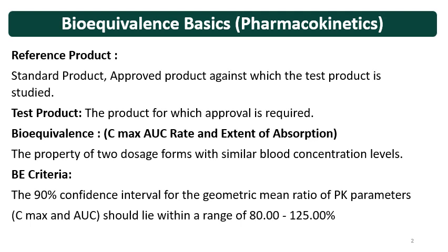Rate of absorption is measured by Cmax, and extent of absorption is measured by AUC — that is, area under the curve. In simple terms, AUC represents the dose given versus the dose absorbed, and it should be similar to that of the reference formulation.